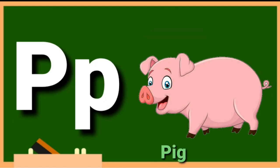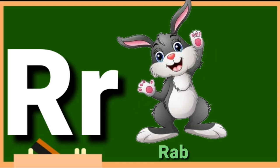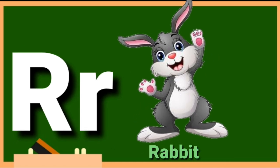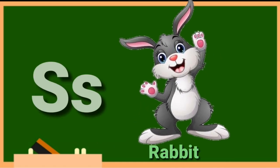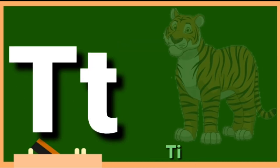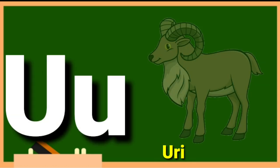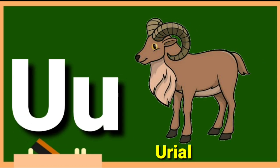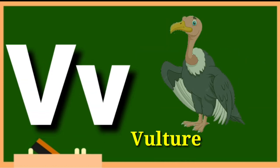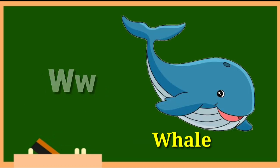P for pig. Q for quail. R for rabbit. S for sheep. T for tiger. U for urial. V for vulture.